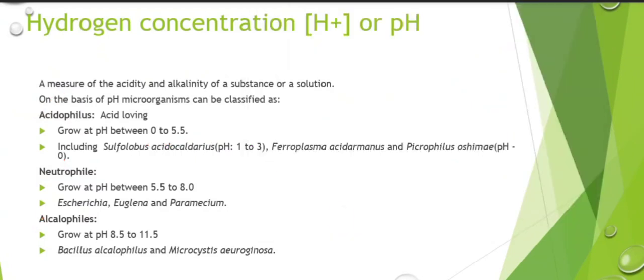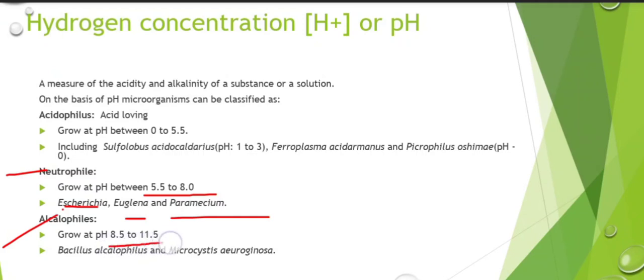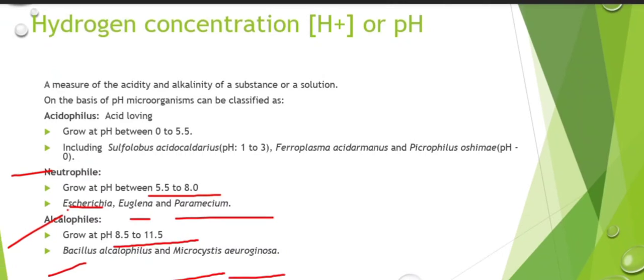Neutrophiles grow from pH 5.5 to 8.0. Examples include Siretia, Euglena, and Paramecium. Alkalophiles grow from pH 8.5 to 11.5. Examples are Bacillus alcalophilus and Microcystis aeruginosa.